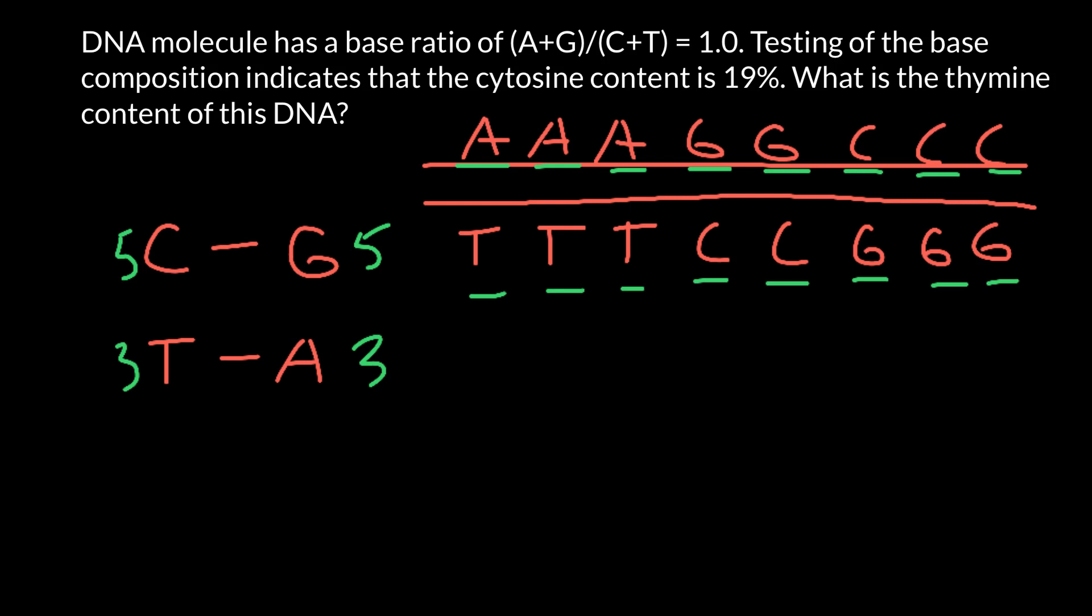And now, let's return to our problem. We are told that we have cytosine content as 19%. We can use absolute numbers as in our example, or we can use percentages here.